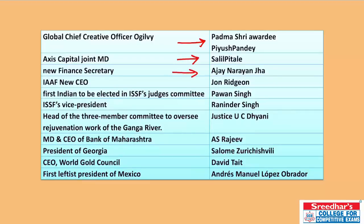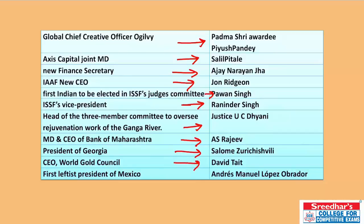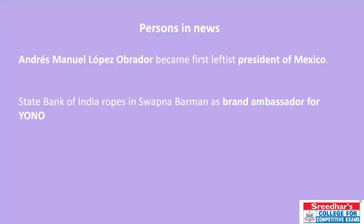Global CEO of Ogilvy — Padma Shri Piyush Pandey; Accenture Capital Joint MD — Salil Parekh; New Finance Secretary — Ajay Narayan Jha; IAAF new CEO — John Ridgeon; First Indian elected to ISSF's Judges Committee — Pawan Singh; ISSF's first Indian Vice President — Raninder Singh; Head of three-member committee to oversee regeneration work of Ganga River — Justice U.C. Dhyani; MD & CEO of Bank of Maharashtra — A.S. Rajeev; President of Georgia — Salome Zourabichvili; CEO of World Gold Council — David Tate; First leftist President of Mexico — Andrés Manuel López Obrador.